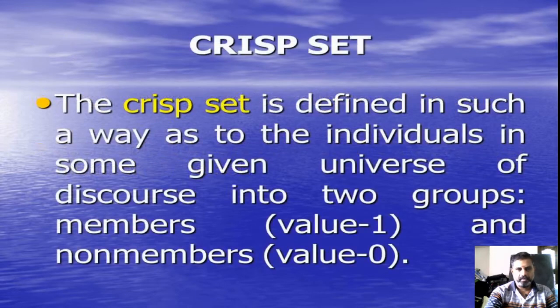Crisp set. The crisp set is defined in such a way as to divide the individuals in some given universe of discourse into two groups: members (value-1) and non-members (value-0).